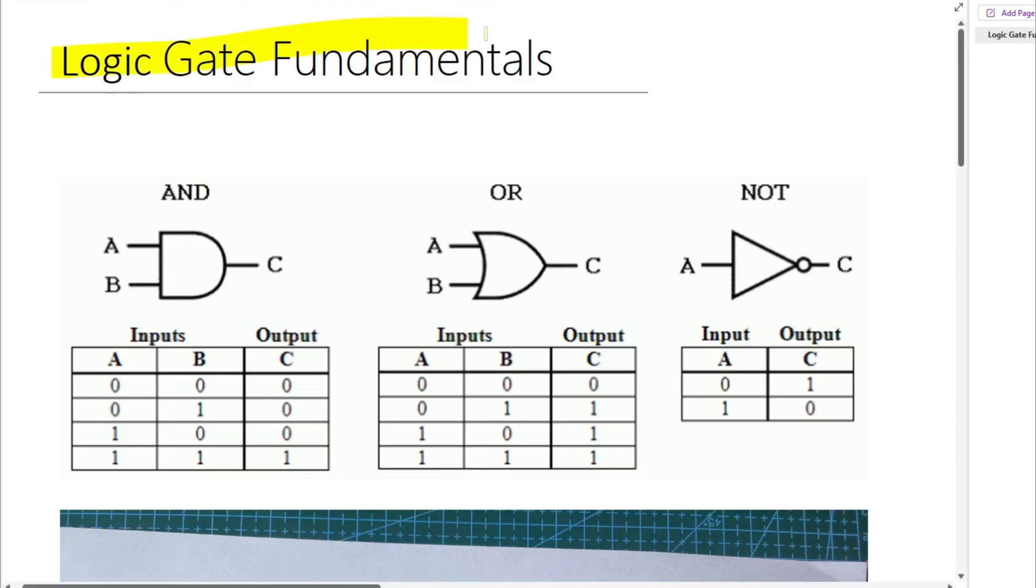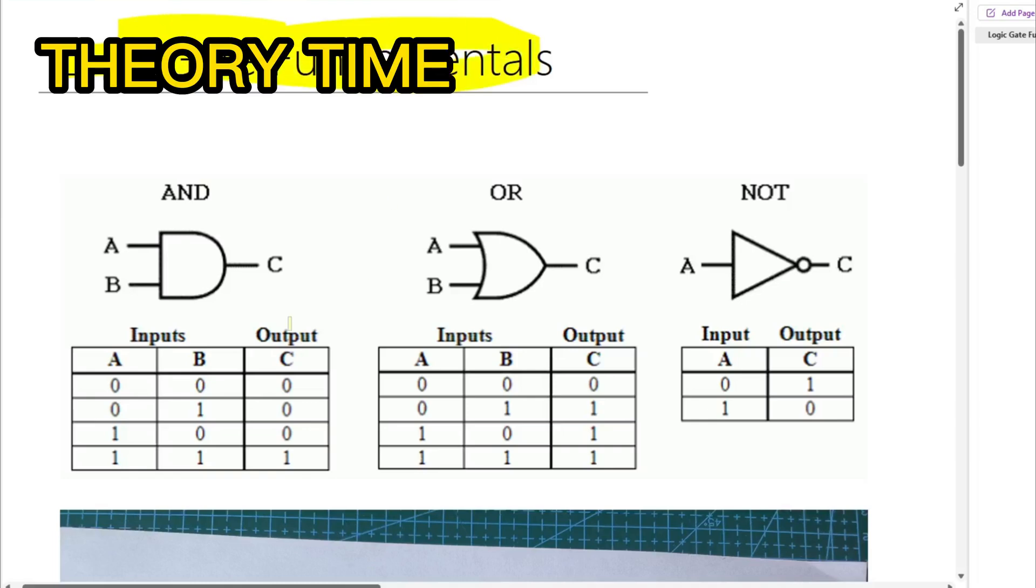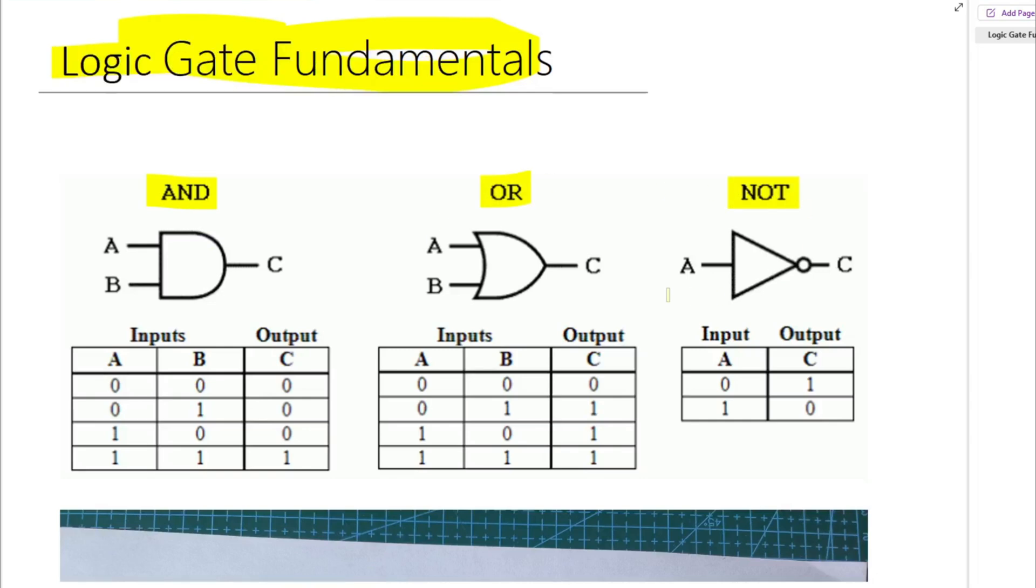So let's have a look at the logic gates fundamentals and the basic gates are AND, OR, and NOT. These are used in your computer and basically they're like a gate that allows the electricity to flow based on some conditions. For example, AND gate has two inputs, A and B, and the output is C.